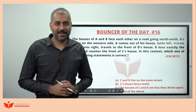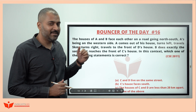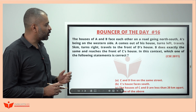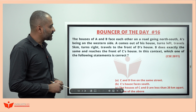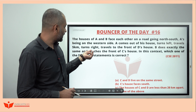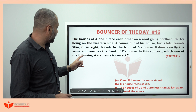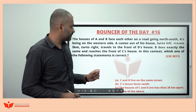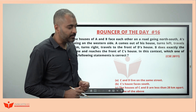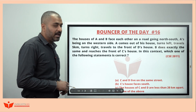Hello everyone, I'm Shamat Goda, seaside faculty at Insights. I welcome you once again for the seaside series question of the day 16. The question says: the houses of A and B face each other on a road going north-south, B being on the western side. A comes out of his house, turns left, travels five kilometers, turns right, and travels to the front of D's house. B does exactly the same and reaches the front of C's house. Which one of the following statements is correct? This question is taken from the 2011 paper.